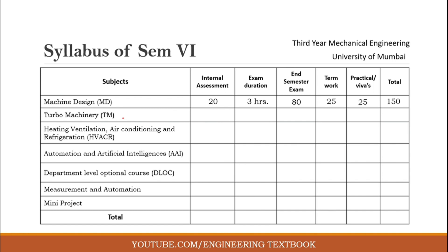Our second subject is Turbo Machinery. It also has 20 marks internal assessment, 3 hours exam duration, and 80 marks end semester examination. Term work is 25 marks, but Turbo Machinery does not have a practical or viva. Therefore the total for Turbo Machinery is 125 marks.